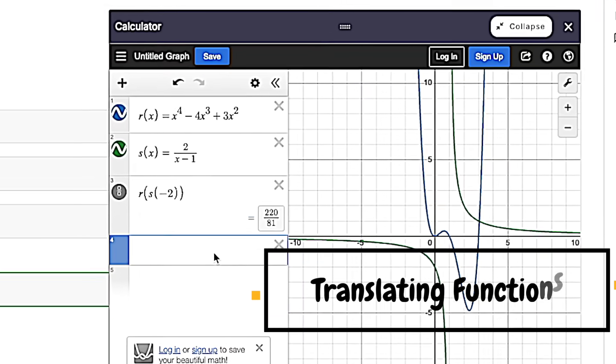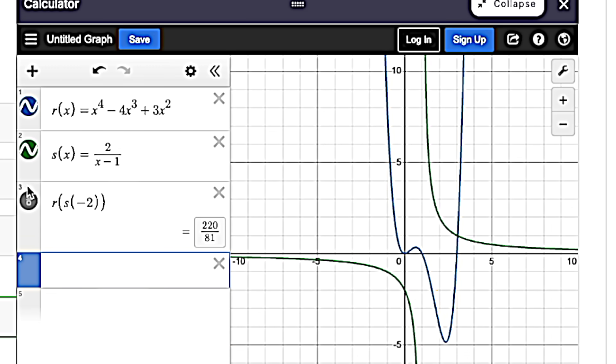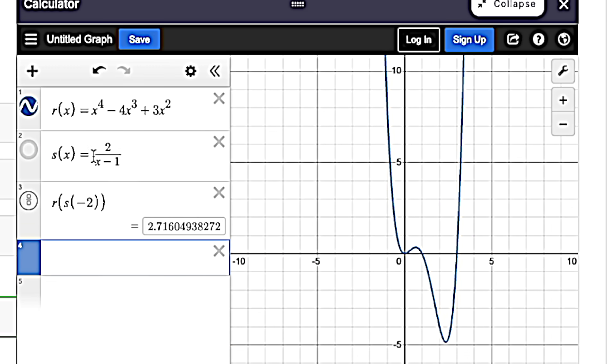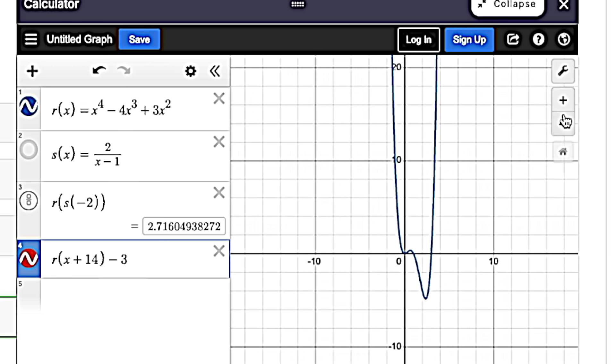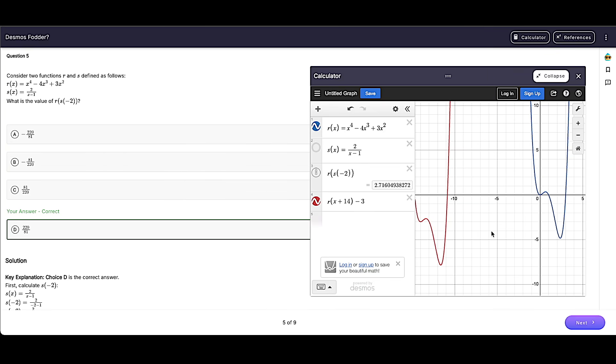And while we're hanging out, you can also translate functions in the same way. So let's pretend we just had this r of x here. And we wanted to figure out what's r of x minus 3. Well, let's put r of x minus 3. And it'll create that graph for you. We can also figure out what's r of x plus 14 minus 3. It'll create that graph for you. So you can also translate functions just like that.